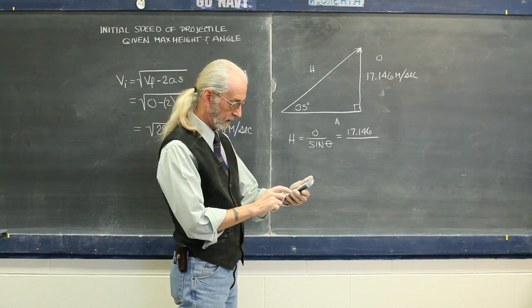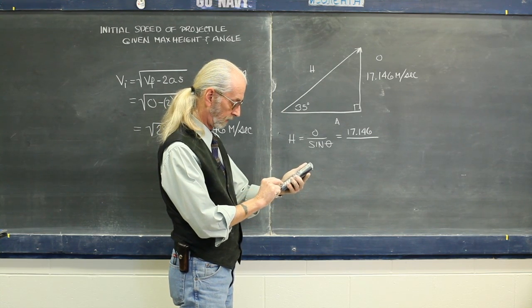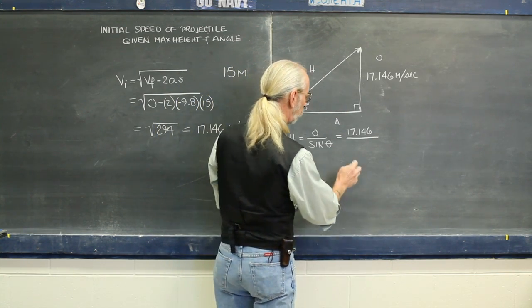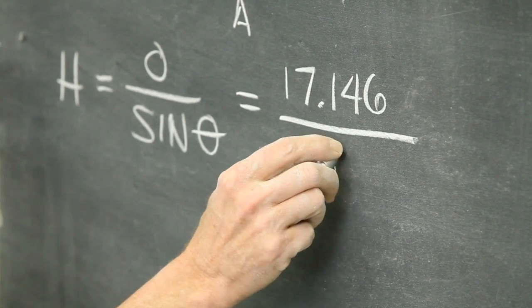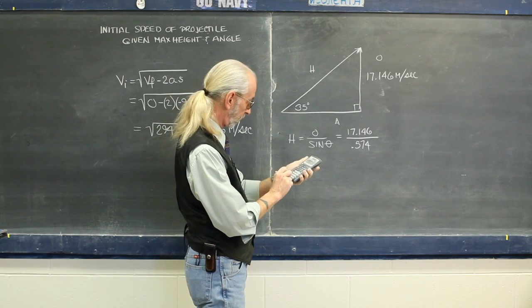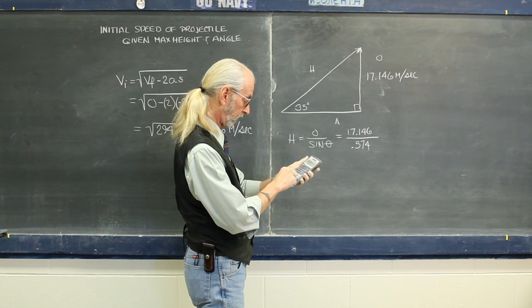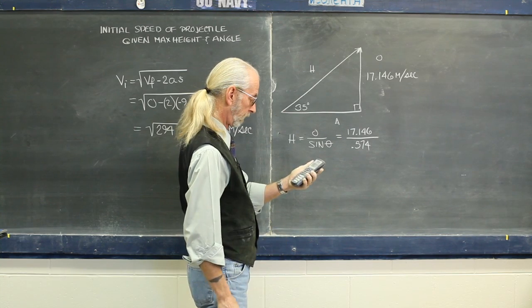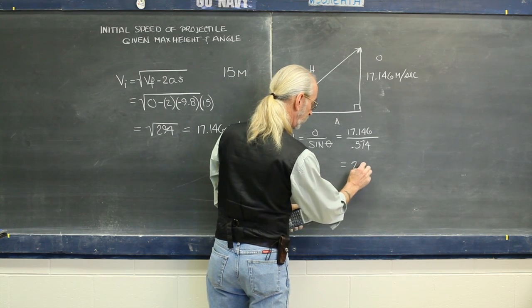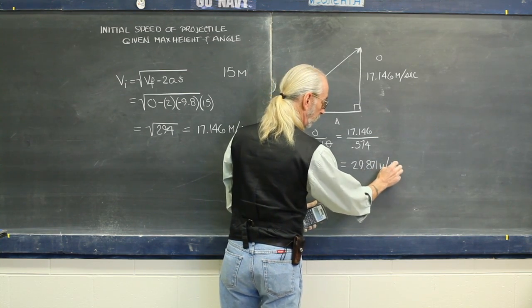divided by the sine of 35 degrees, 17.146 divided by sine of 35 degrees equals 29.871, 29.871 meters per second.